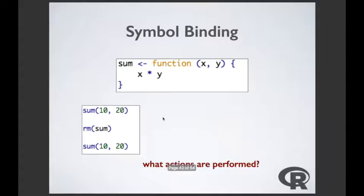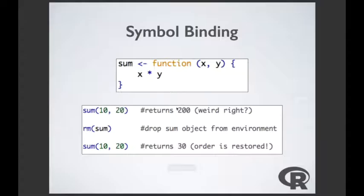If I use the remove function and remove sum from my environment, it drops it from the environment. Then running sum(10, 20) again returns 30, because now R goes back to the predefined sum function. This demonstrates how symbol binding works — the symbol sum was re-bound to a new function object, overriding the predefined one.